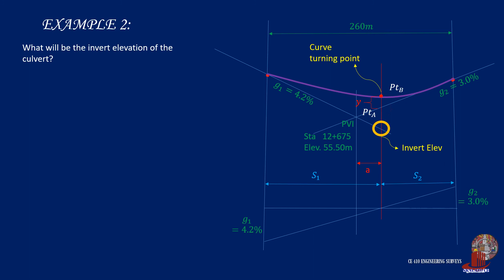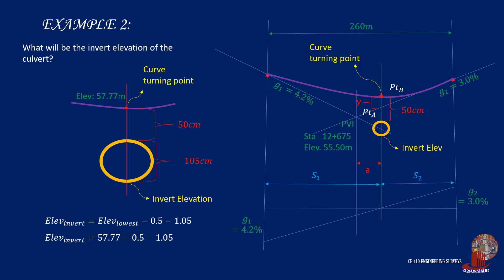Learning the elevation of the lowest point, we can locate the culvert and identify the invert elevation. The problem states that the recommended clearance between the curve and the culvert is 50 centimeters. Then the outer diameter is measured as 105 centimeters. So reducing these values from the elevation of the lowest point of the curve will identify the invert elevation. And this is computed as 56.22 meters.